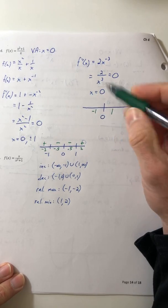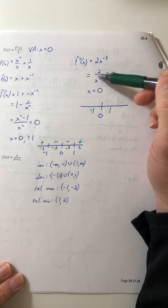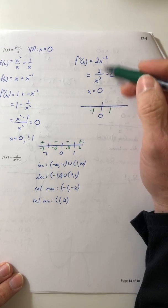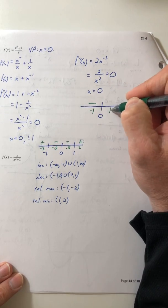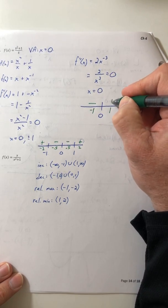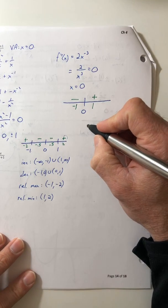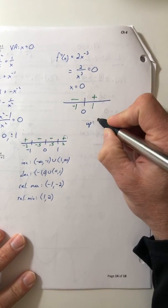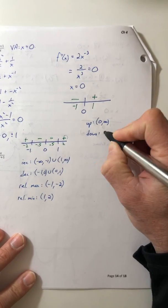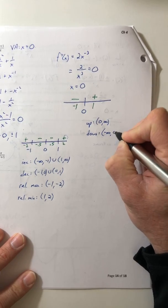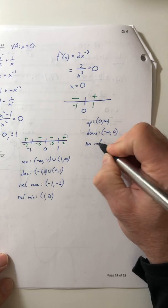So choose my test numbers negative one and one. I'm going to plug them into the second derivative, either this one or this one. Not going to matter. So I plug in the negative one, it comes out as a minus. Plug in the positive one and it's a plus. So it's concave up from zero to infinity and concave down from negative infinity to zero and no inflection point.